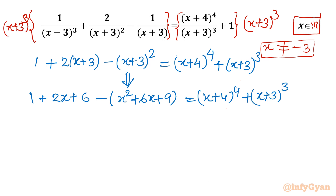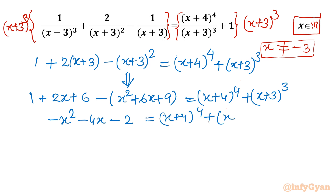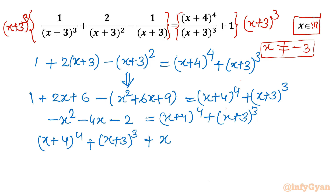Simplifying the LHS: combining like terms gives us minus x² minus 4x minus 2. Moving all terms to the RHS and adding 2 to both sides, we rearrange the equation. The result becomes (x+4)⁴ plus (x+3)³ plus (x+2)² equals 2.